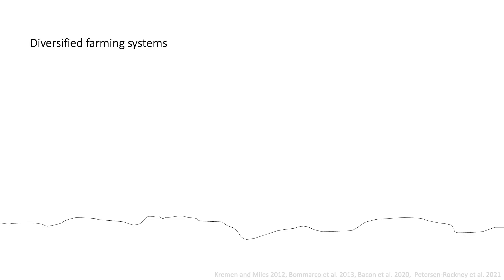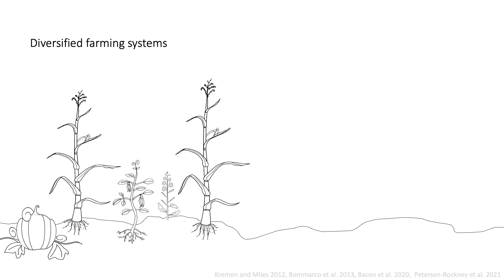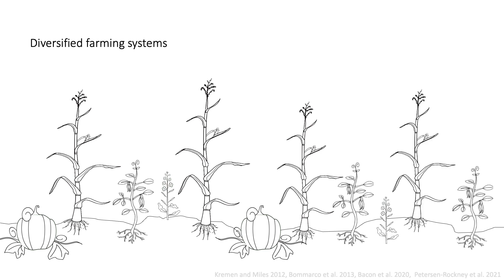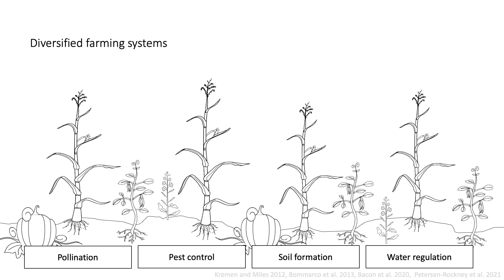In order to understand the impacts of industrial agriculture, it helps to first orient towards diversified farming systems. In non-industrial, low-input, diversified farming systems, complex communities of plants, animals, bacteria, and fungi contribute to ecosystem functions that support sustainable food production. These include vital processes such as pollination, pest control, soil formation, and water regulation. To support their function, farmers must manage biodiversity at field, farm, and landscape scales. This kind of biodiversity, and the vital processes it provides, is generally absent from industrialized systems.